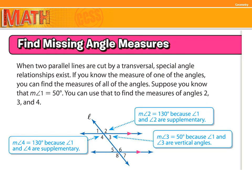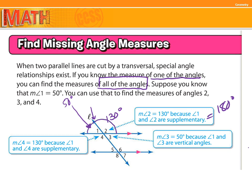Finding missing angle measures when two parallel lines are cut by a transversal — here's our transversal. Special angle relationships exist: if you know the measure of one angle, you can find the measure of all the angles. Suppose you know that the measurement of angle one is 50 degrees. Then angle two is going to be 130 degrees because angle one and angle two are supplementary — they equal 180 degrees. That 180 degrees is key when doing missing angle problems.